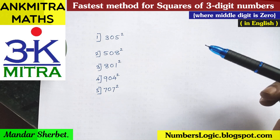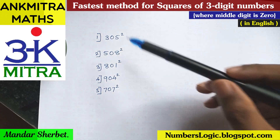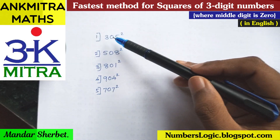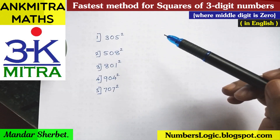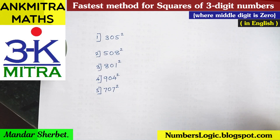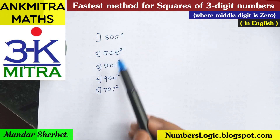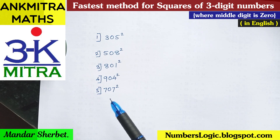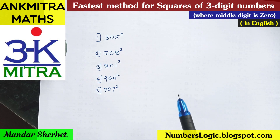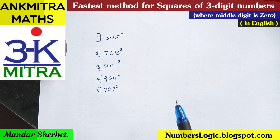This particular method is applicable only where the tens place digit in all three digit numbers is zero. In such situations, we can find the squares of these three digit numbers in a matter of just two or three seconds. Watch this video carefully, you will understand the method and can practice it to gain confidence — I'm sure every one of you will be able to solve it within seconds.